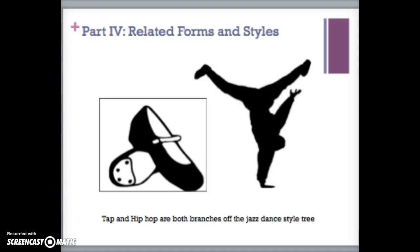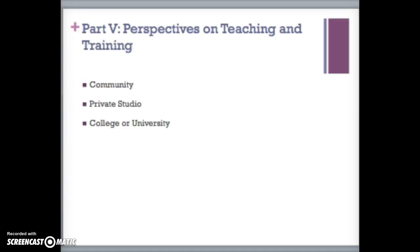Jazz dance forms such as tap and hip-hop have their roots in jazz and are branches off the jazz tree. Both are rhythmic and have different styles depending on each dancer and choreographer. The authors identified three main environments for jazz dance to be taught: community, private studios, and colleges or universities. No matter where jazz is taught, there will be differences due to teacher style.